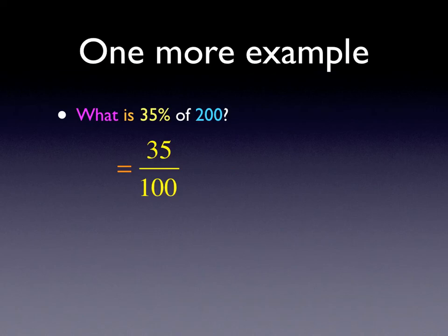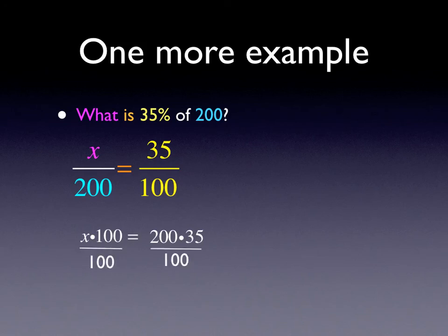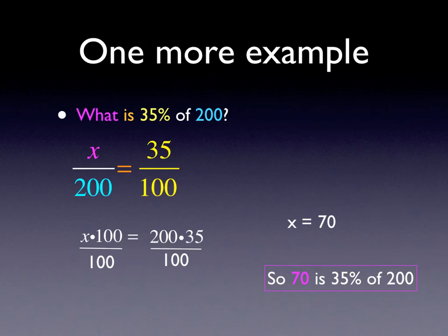One last example: what is thirty-five percent of two hundred? The 'what' part is our variable x. The 'is' is the equal sign, and thirty-five percent is thirty-five one-hundredths. The whole set has two hundred in it, so our denominator is two hundred. We want to know how many out of two hundred is the same as thirty-five out of one hundred. Using cross products: x times a hundred equals two hundred times thirty-five. Solving for x, we get seventy. So seventy is thirty-five percent of two hundred — seventy out of every two hundred is the same as thirty-five per one hundred, or thirty-five percent.